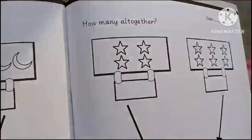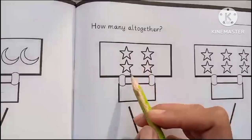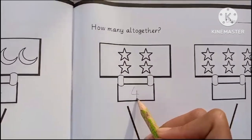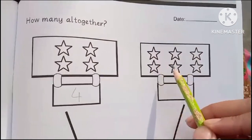Then how many altogether? Let's count the stars. One, two, three, four. Four stars. One, two, three, four, five, six. There are six stars.